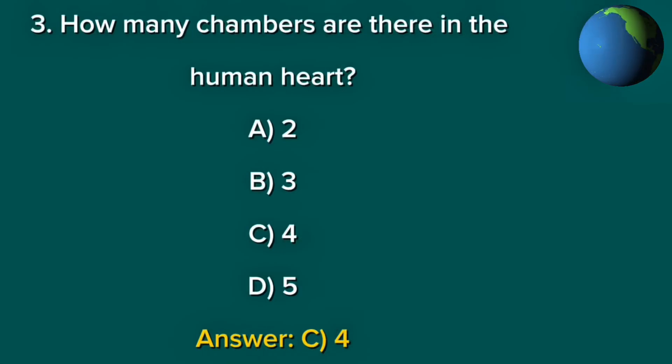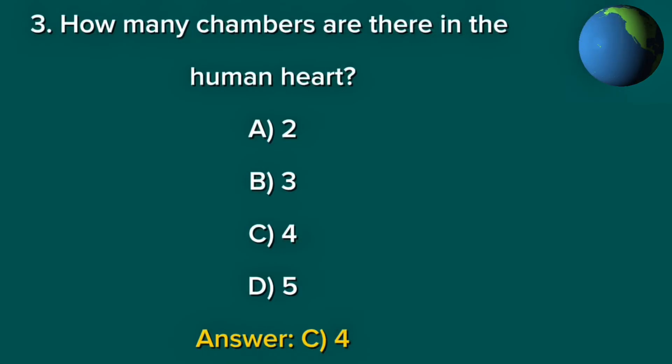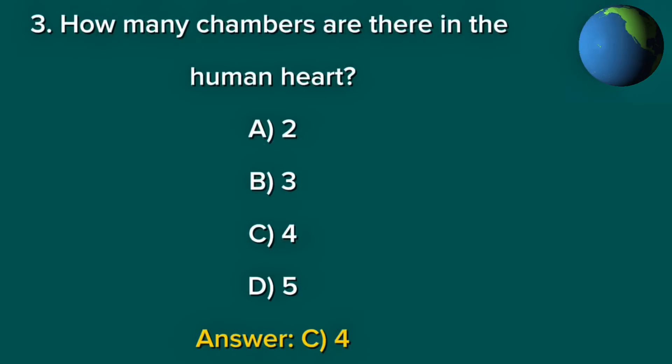Question 3. How many chambers are there in the human heart? A. 2. B. 3. C. 4. D. 5. Answer: C. 4.